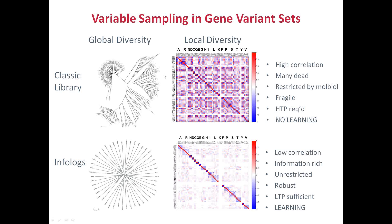If you look at the information content residue by residue, or variable by variable, and make a heat map, everything clusters in the top right corner. Every single variable is highly correlated or negatively correlated. Everything that's red or blue is correlated — the white is what you want: variables that are as uncorrelated as possible. In a typical library, everything is highly correlated, so it's impossible to deconvolute which variable actually affects the property you care about.